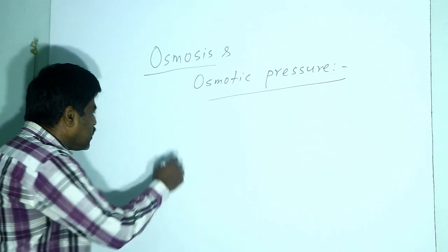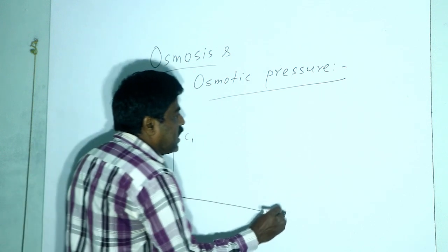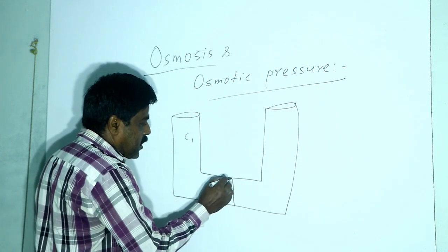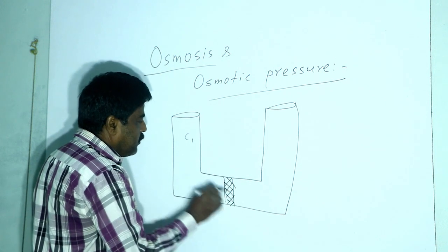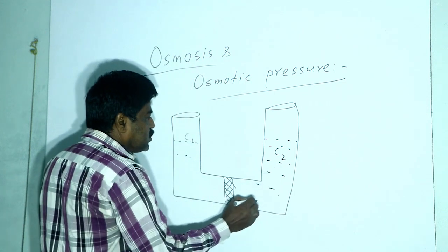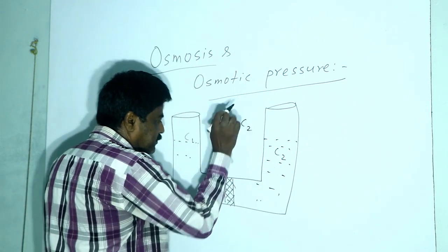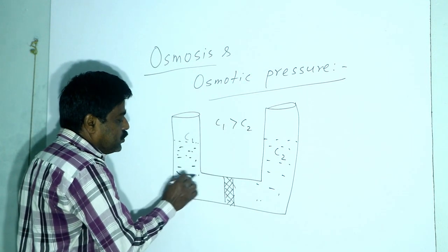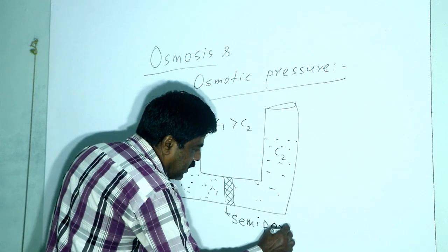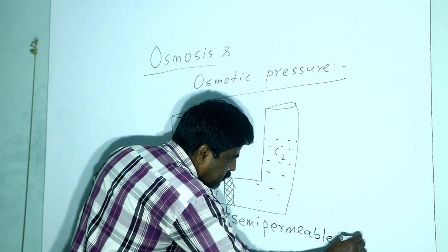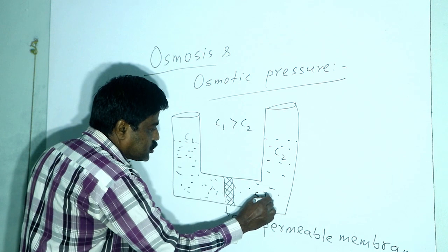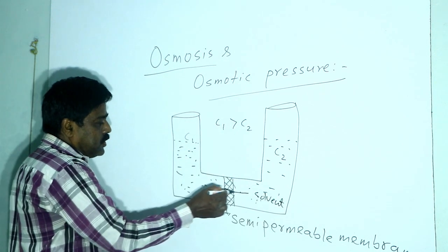If we prepare a solution — let us say concentration C1 is kept in one side of a U-tube, where the middle part has a semi-permeable membrane — and another solution of concentration C2 is on the other side, where C1 is greater than C2, these two solutions are separated by the semi-permeable membrane. This membrane only allows the solvent molecule to pass from the lower concentration to the higher concentration side.